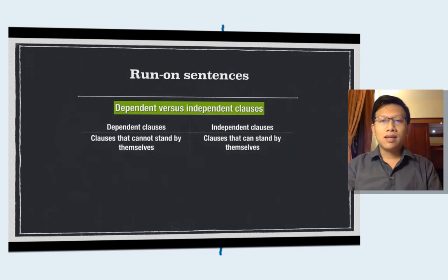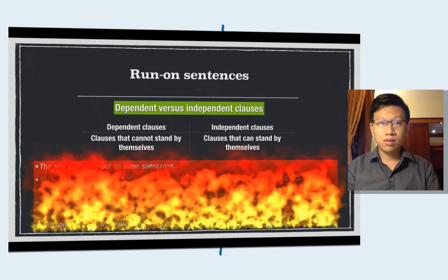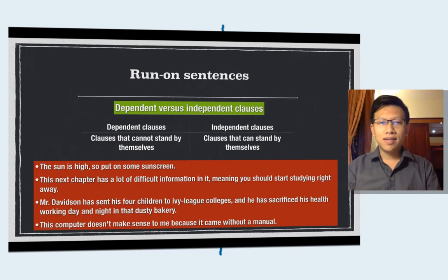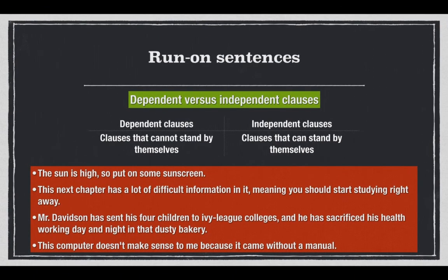Let's see some examples and then we'll try to find out which one is the dependent and which one is the independent clause. Example number one: 'The sun is high, so put on some sunscreen.' Very easy. 'The sun is high' is the independent clause, while 'so put on some sunscreen' is the dependent clause. Example two: 'The next chapter has a lot of difficult information in it' — that is the independent clause, and the relative clause that follows is dependent; it depends on the first clause for its existence.